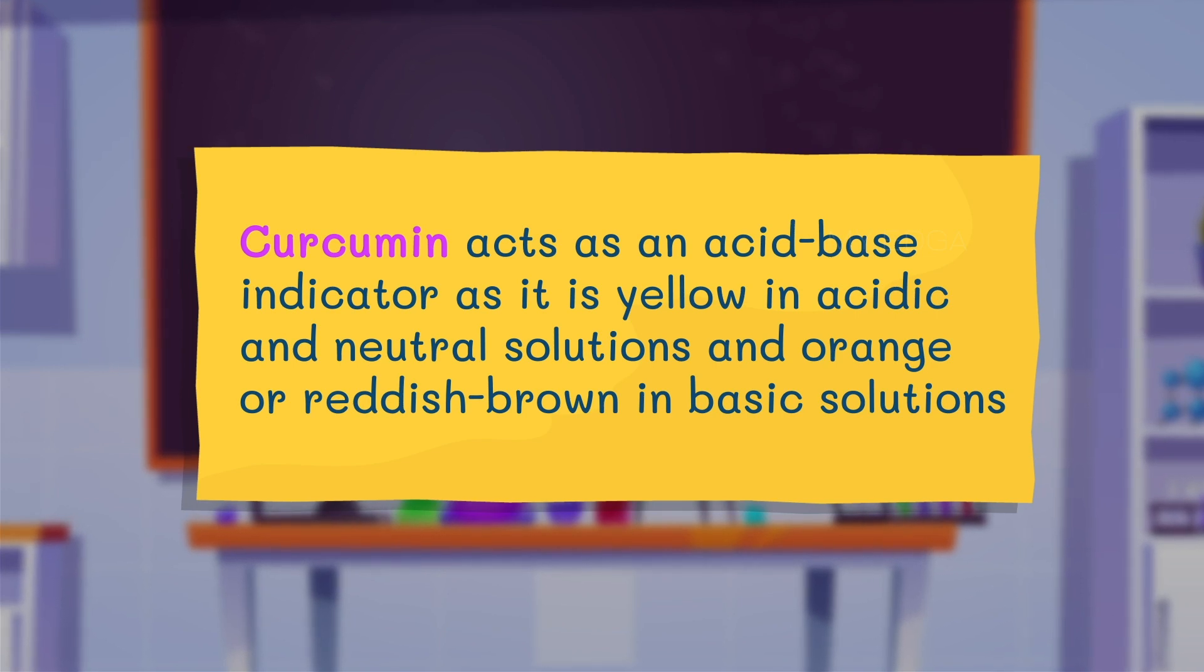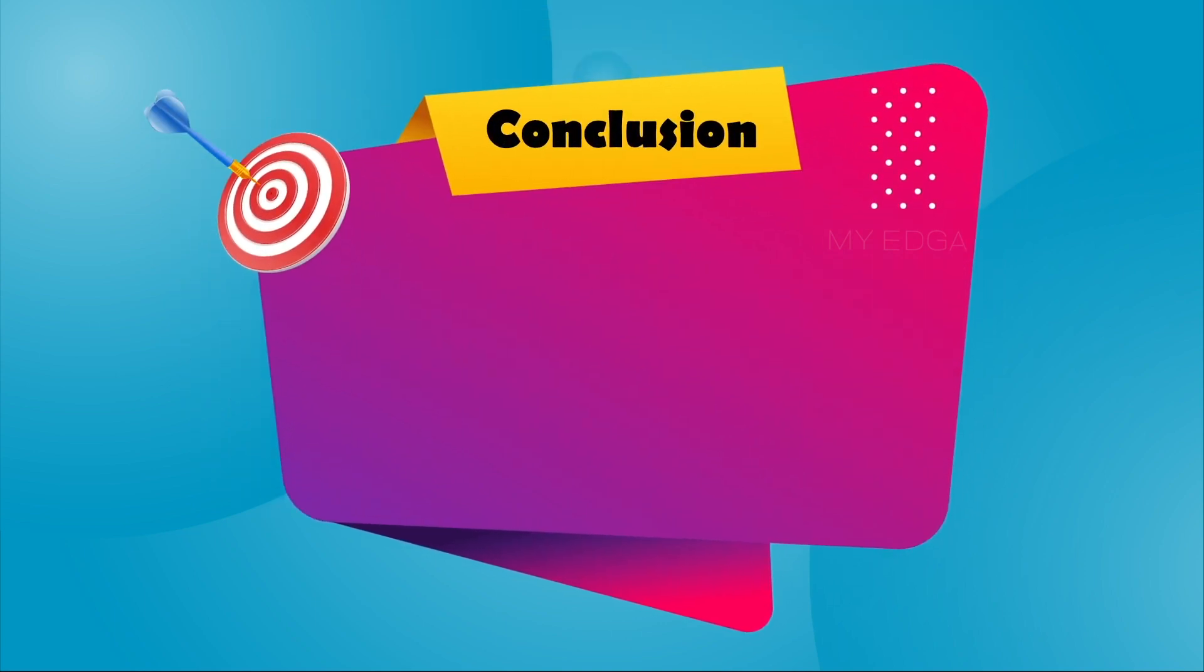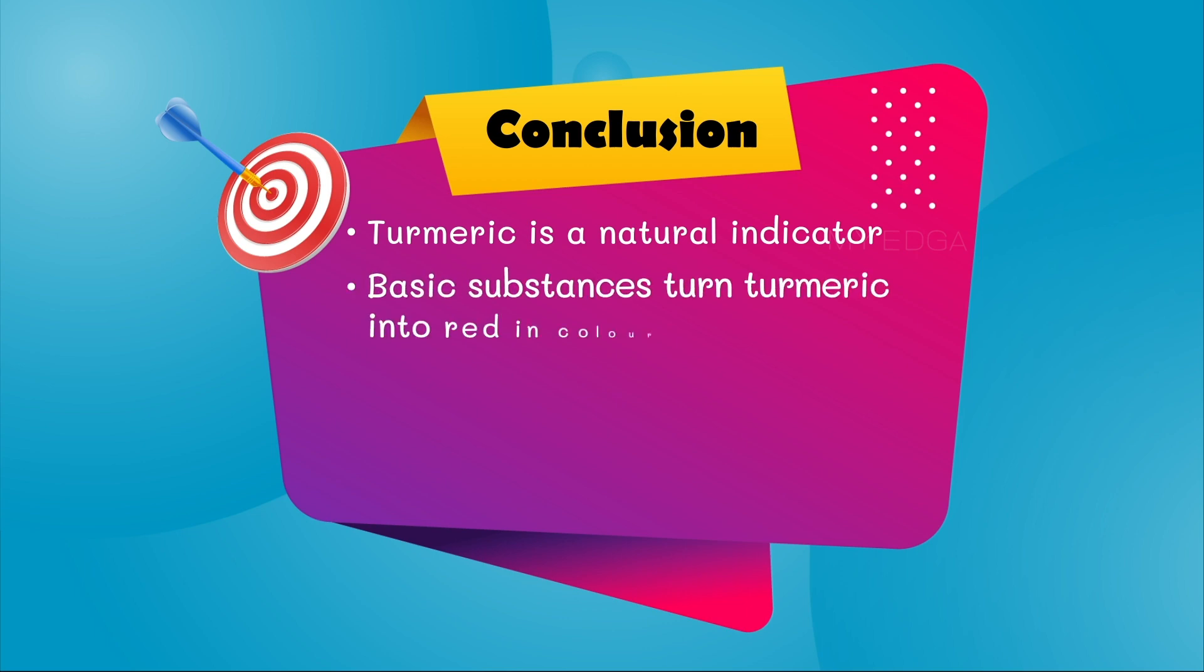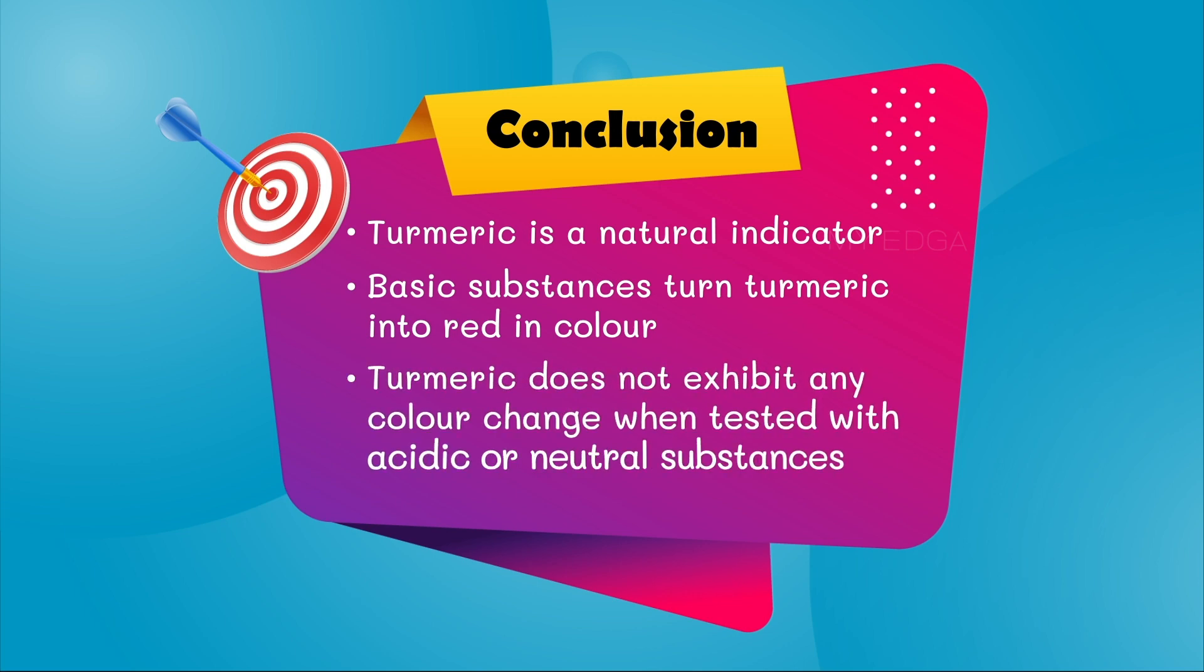So from this video we can conclude that turmeric is a natural indicator. Basic substances turn turmeric into red in color. Turmeric does not exhibit any color change when tested with acidic or neutral substances.